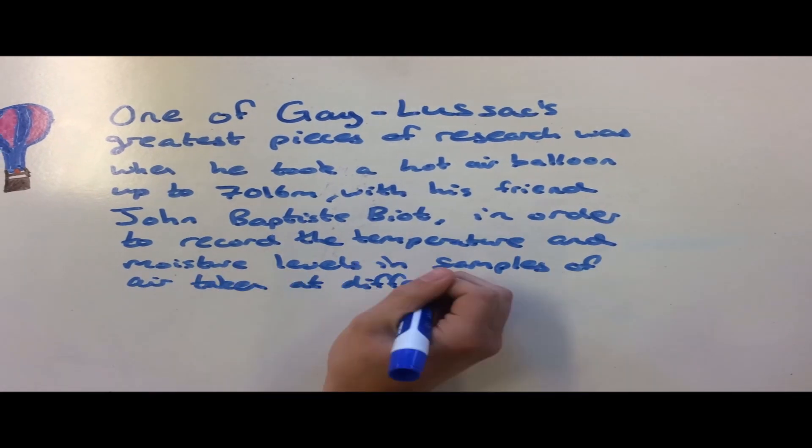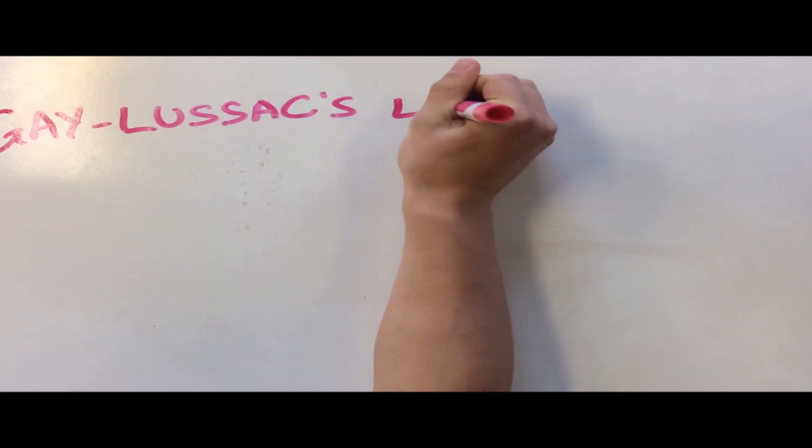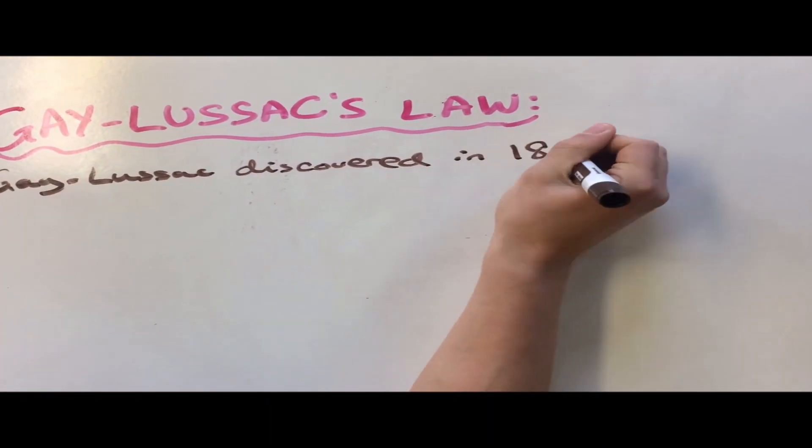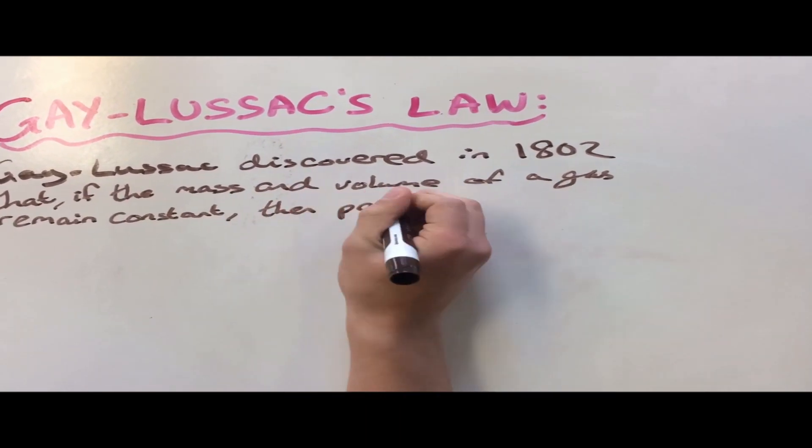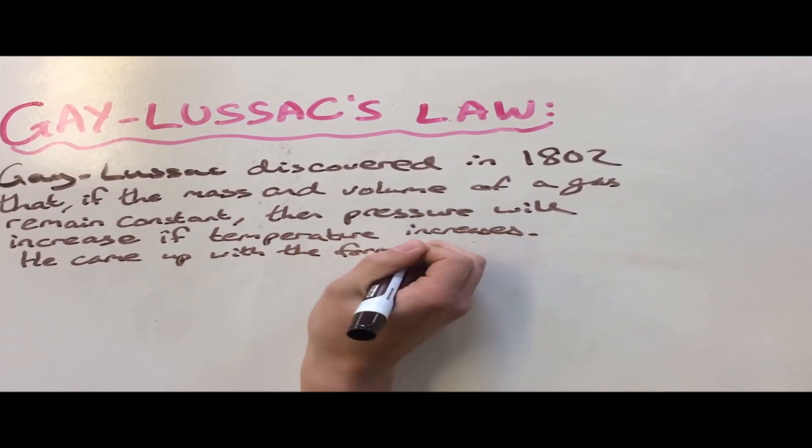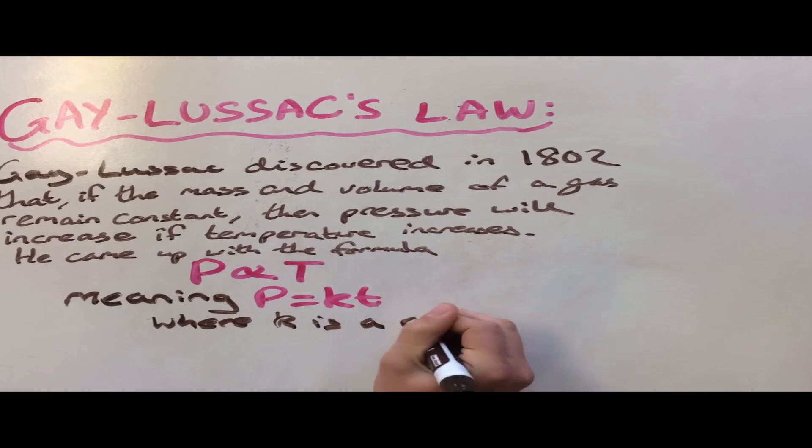He came up with important gas laws. As a scientist he had no flaws. From birth up till 1850, he did great work I must agree. So he died when he was 71, but his projects were a home run. Now Joseph was never hated, and yet he's not celebrated.